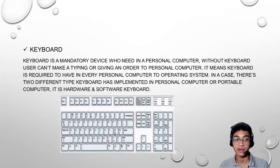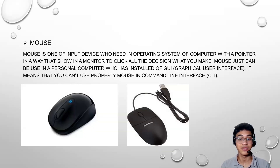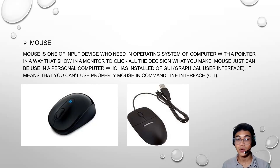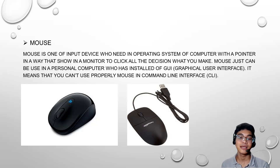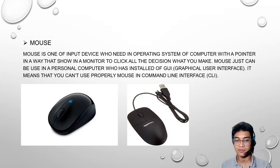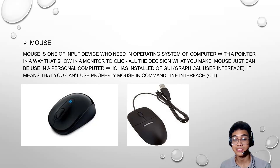For a wired keyboard, you have to plug the cable into a computer port. And the next one, we have the mouse. This is not a mouse as in the animal, but a mouse for a computer. Mouse is an input device used with an operating system that provides a pointer shown on the monitor to click on decisions you make. A mouse can only be properly used on a computer that has a GUI, or graphical user interface. You can't properly use a mouse in a command line interface or CLI, because in a CLI system there is no pointer.